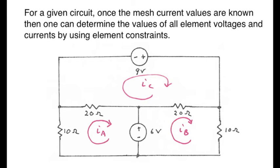If one knows the mesh currents for a given circuit, then one can use the equation I sub N equals I sub X minus I sub Y to obtain any element current. Then one can use element constraints to get all the element voltages. Knowing the mesh currents enables a complete knowledge of the circuit's properties.